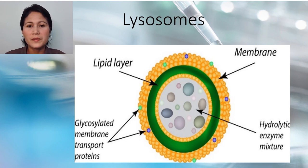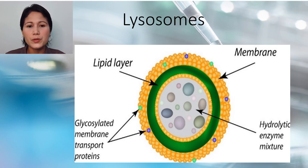Turnover of cell organelles for new cell formation. Another function is extracellular digestion: primary lysosomes secrete hydrolases outside by exocytosis, resulting in degradation of extracellular materials.